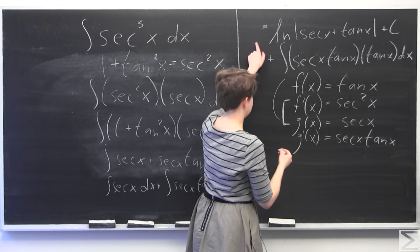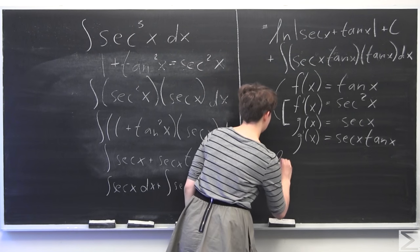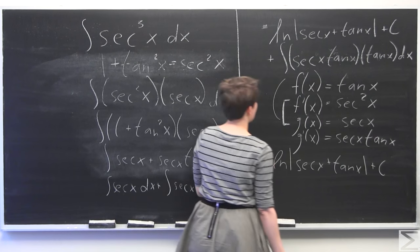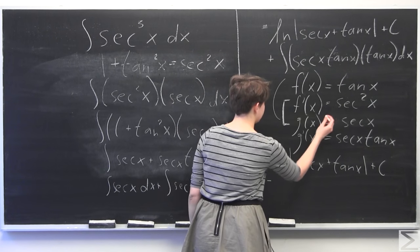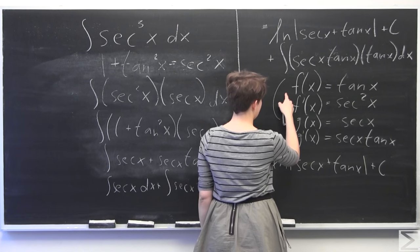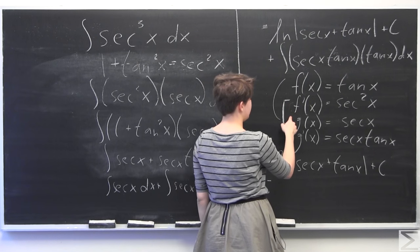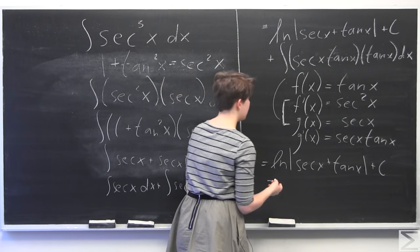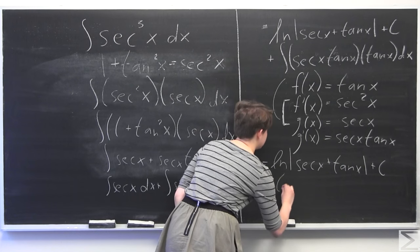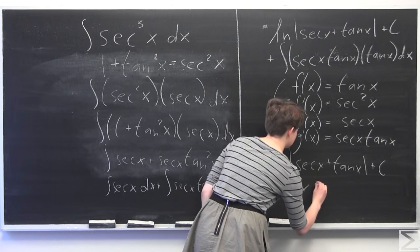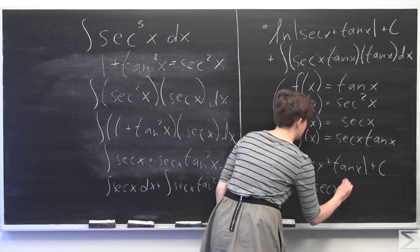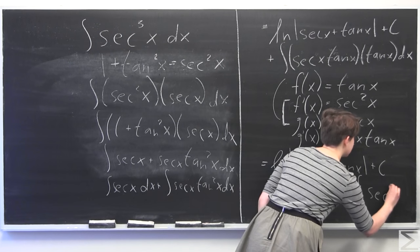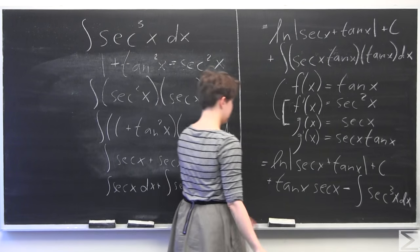Bringing this down: the ln stays the same, so we still have ln of the absolute value of secant of x plus tangent of x plus c. Then, by integration by parts, we add secant of x times tangent of x, and we subtract off the integral of secant squared of x times secant of x, which is secant cubed of x.